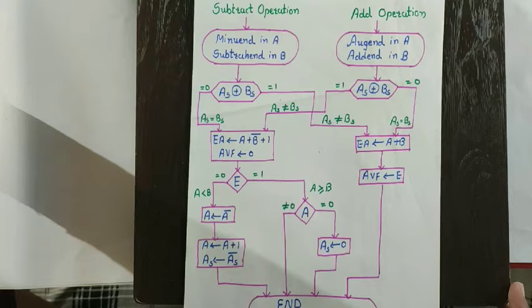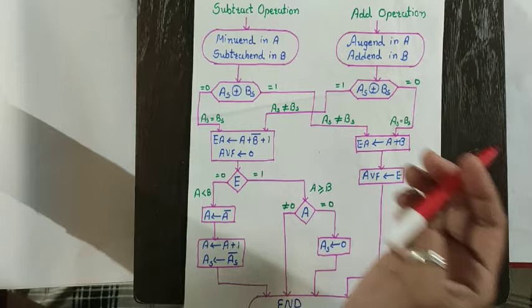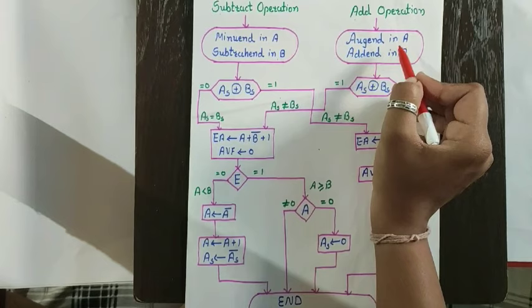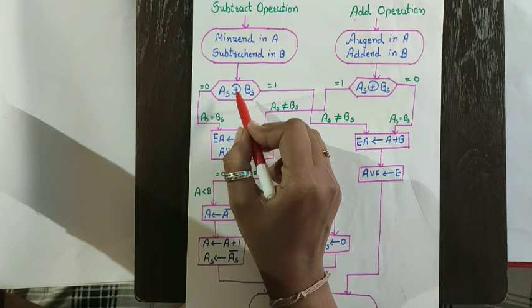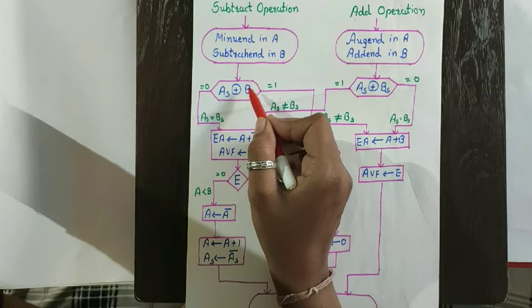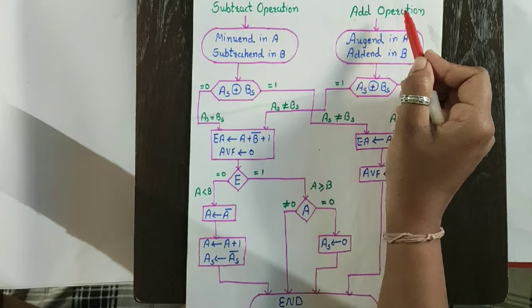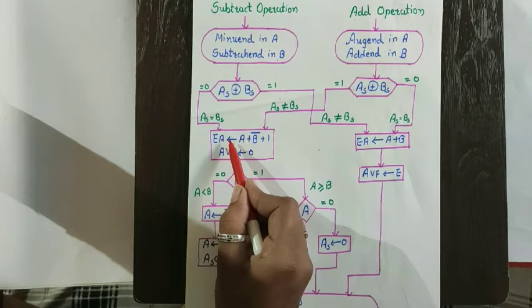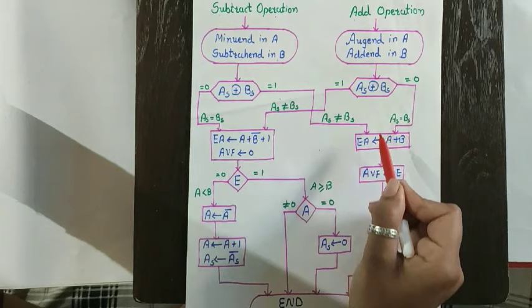Here we have the flowchart for addition and subtraction of sign magnitude numbers. For the subtraction operation, the minuend is in A and subtrahend in B. For addition, the augend is in A and addend in B. We compare whether both the signs are the same or not. If both signs are the same, in addition we perform addition; in subtraction we perform subtraction. But if the signs are different, in addition we perform subtraction, and in subtraction we perform addition.